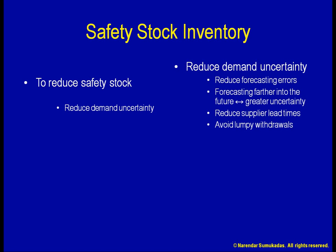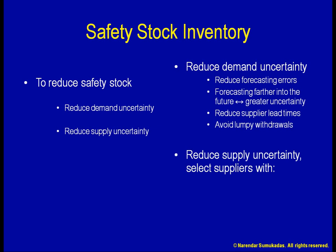This lumpiness of withdrawal can cause demand uncertainty even where there is none. Another factor is supply side uncertainty. Supplier uncertainty can be in terms of poor on-time delivery performance, incorrect delivery quantity, and even higher defect rates. Reducing supplier uncertainty means seeking out a supplier who is more reliable. Reducing all of these uncertainties will reduce the need for safety stock.